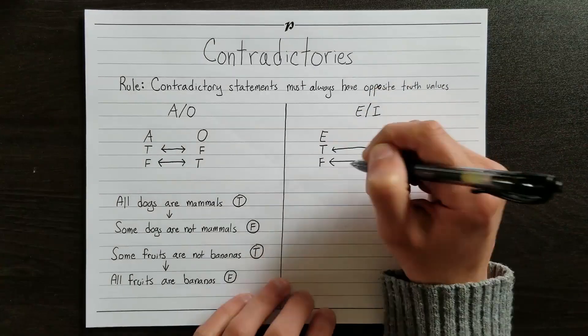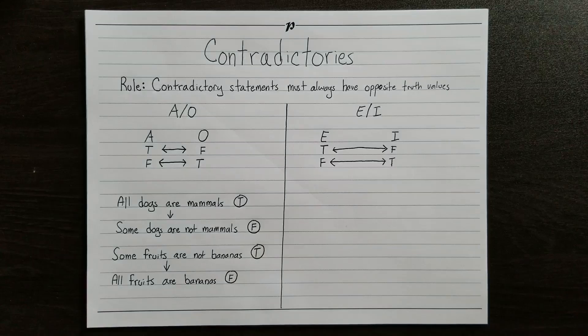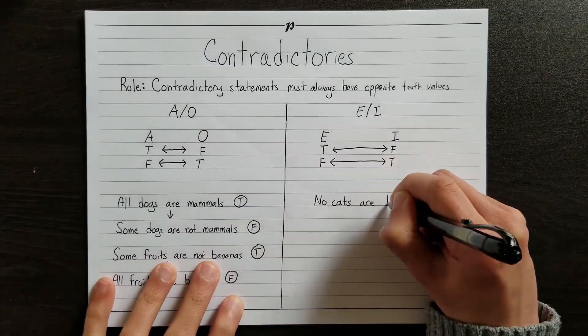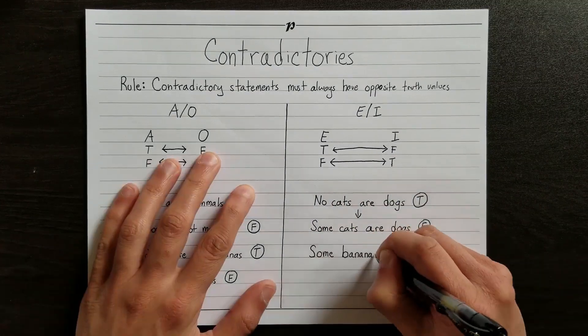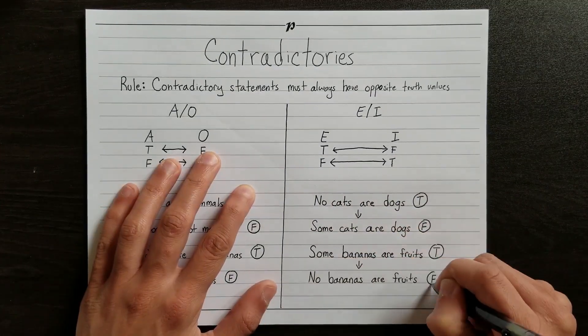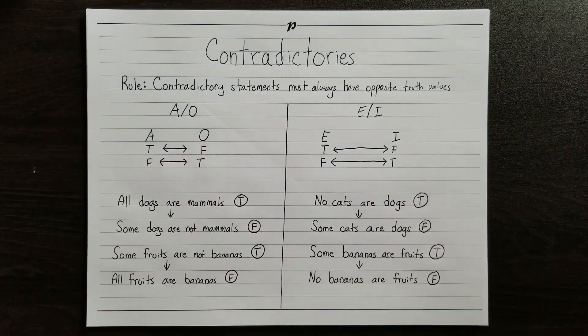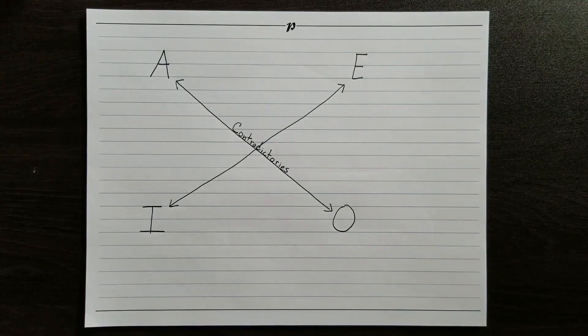Similarly, if some fruits aren't bananas, then it can't be the case that all fruits are bananas. The same goes for E-type and I-type statements. If one is true, then the other must be false, and vice versa. If it's true that no cats are dogs, then it can't be true that some cats are dogs. If it's true that some bananas are fruits, then it can't be true that no bananas are fruits. That's everything you need to know about contradictories, so let's get back to the square and see the next relation.